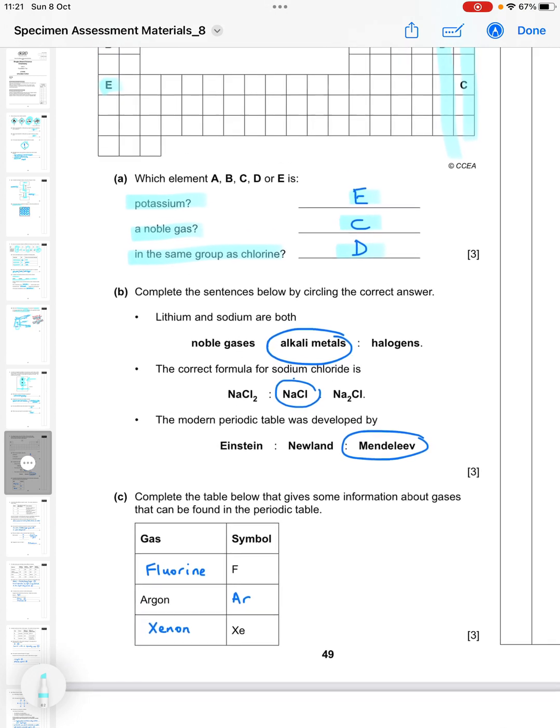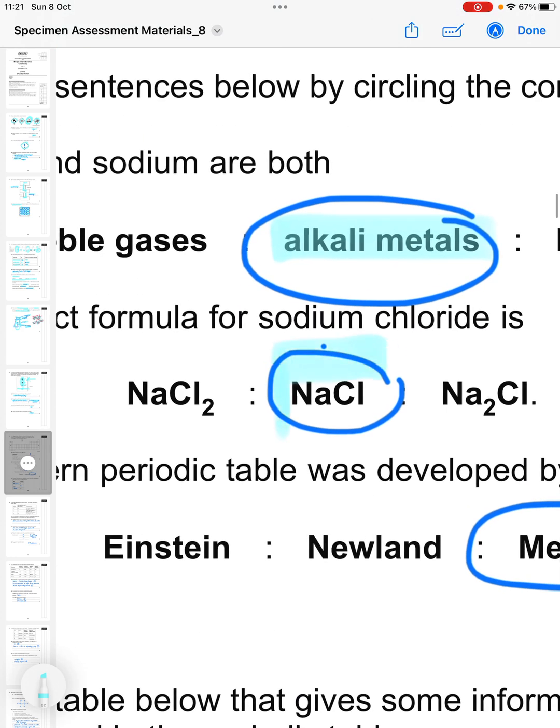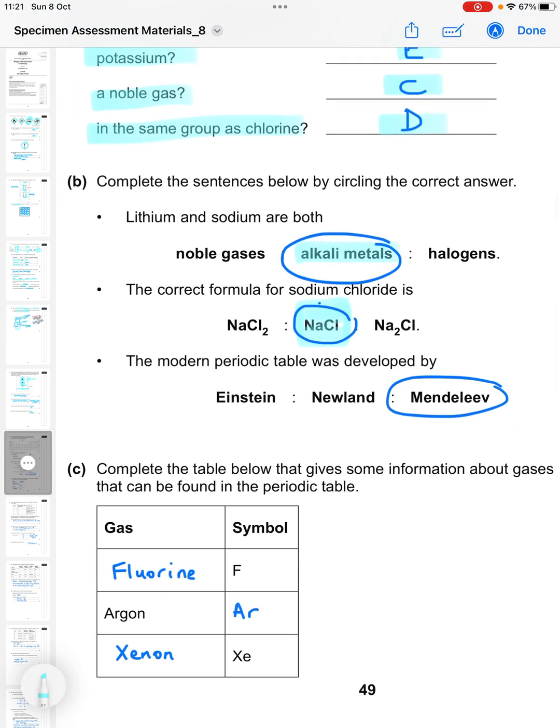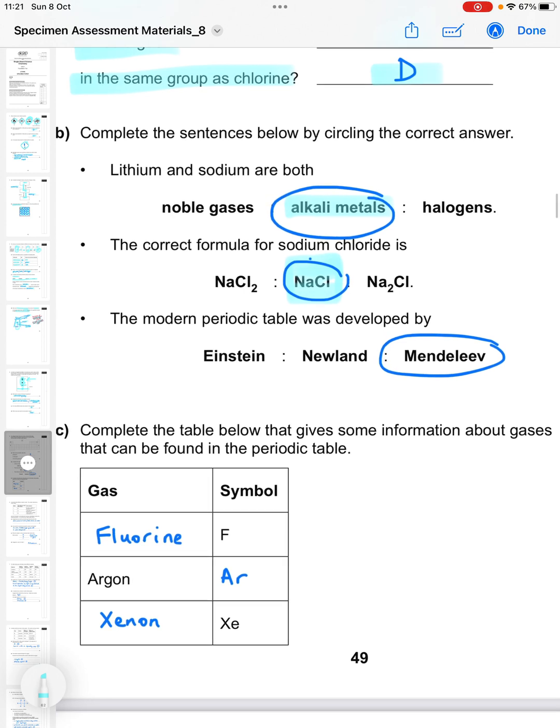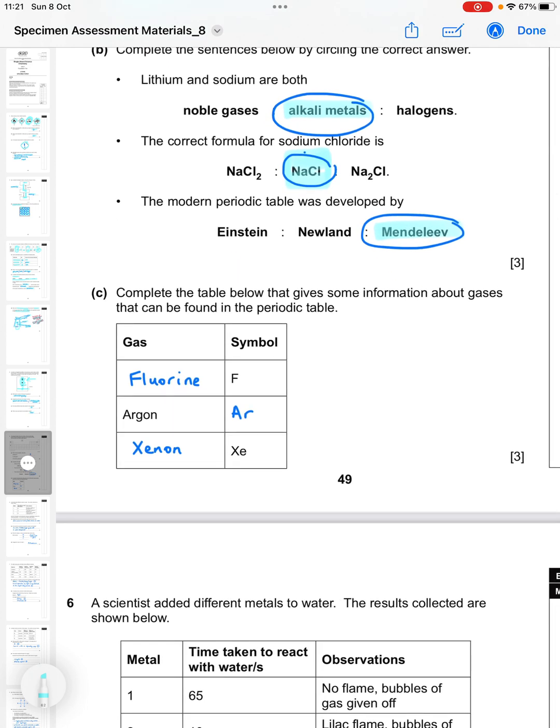Complete the sentences by circling the correct answer. Lithium and sodium are both alkali metals. The correct symbol for sodium chloride is NaCl - so sodium is group one, chlorine is group seven, they react in a one to one ratio. The modern periodic table was developed by Mendeleev.